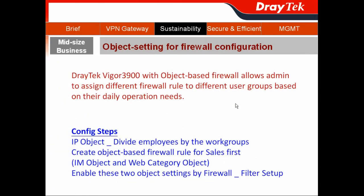The JTAG Vigor3900 also implements the object-based firewall. This feature allows network administrators to assign different firewall rules to different user groups based on their daily operational needs.